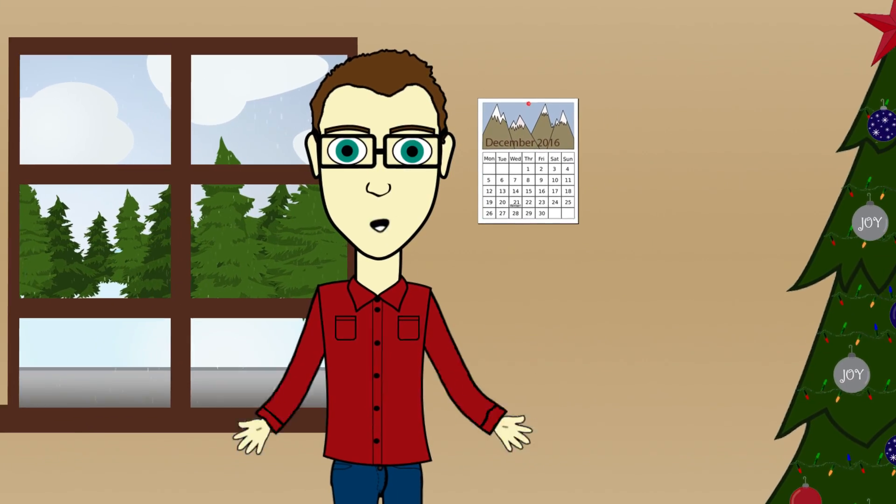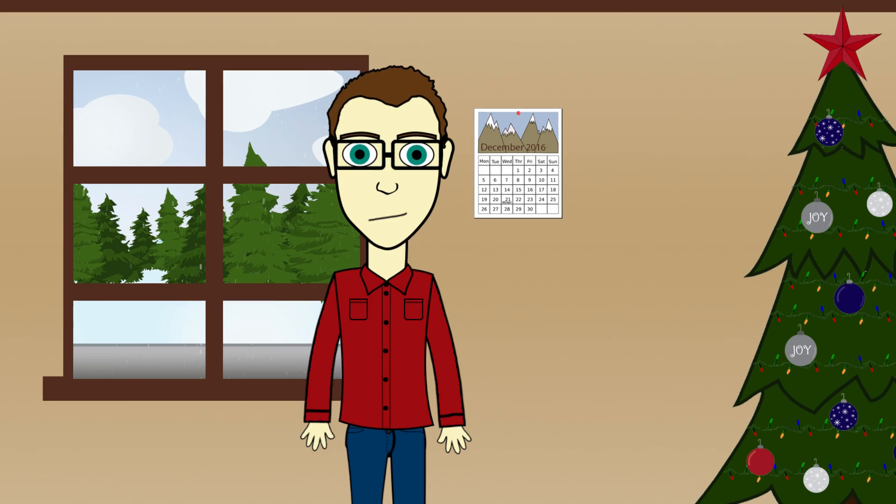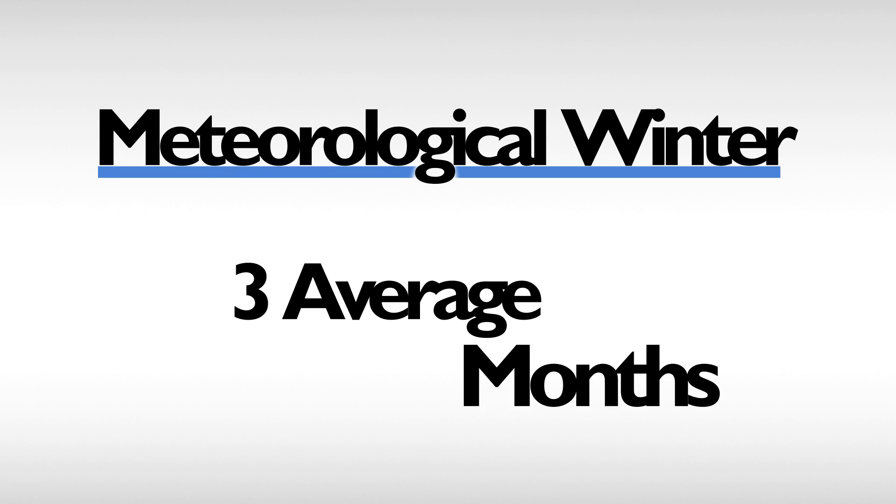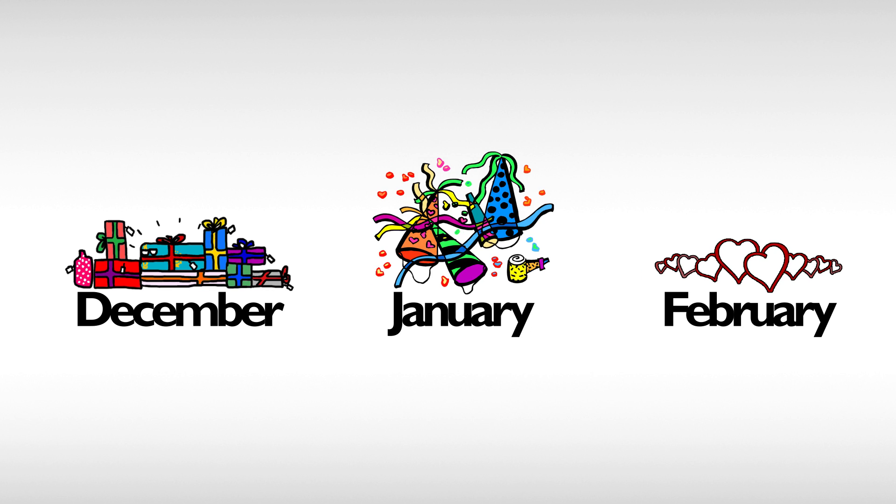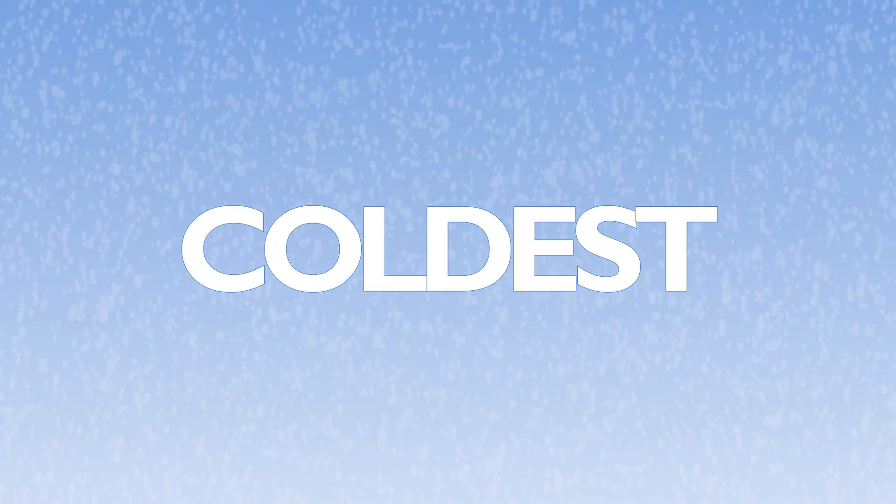What is considered meteorological winter? It is the three average months, December to February, where the weather is typically coldest.